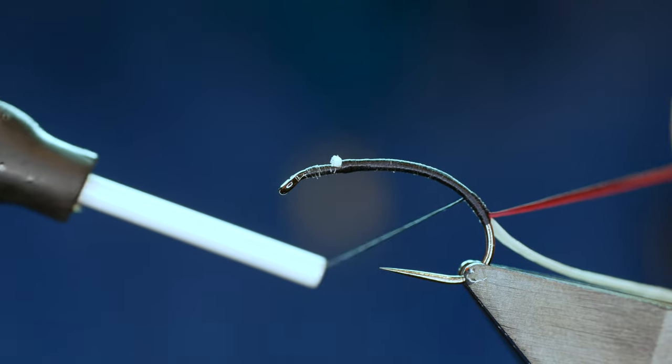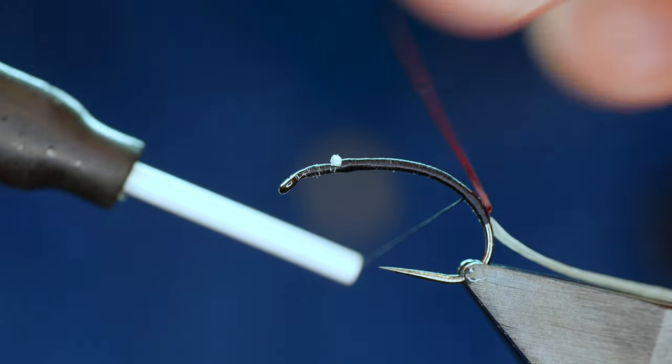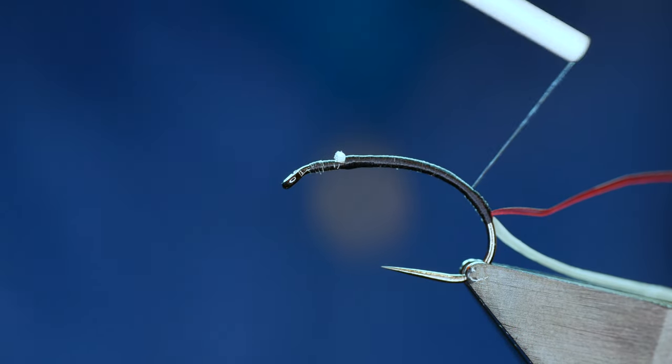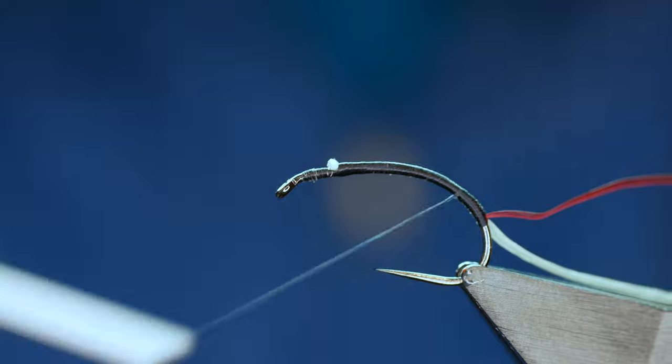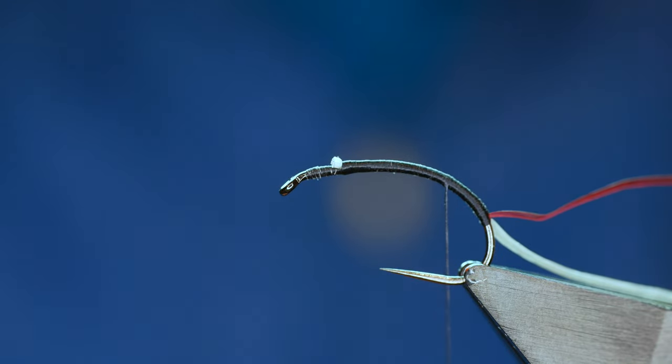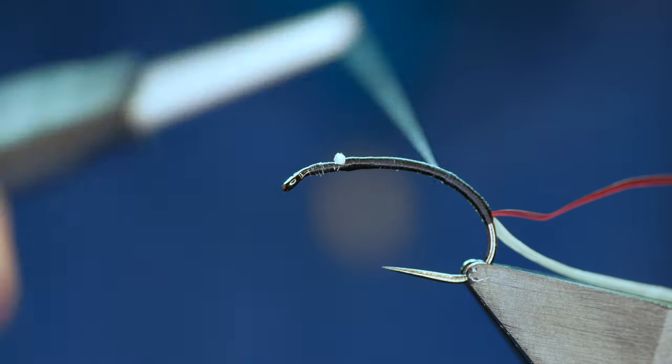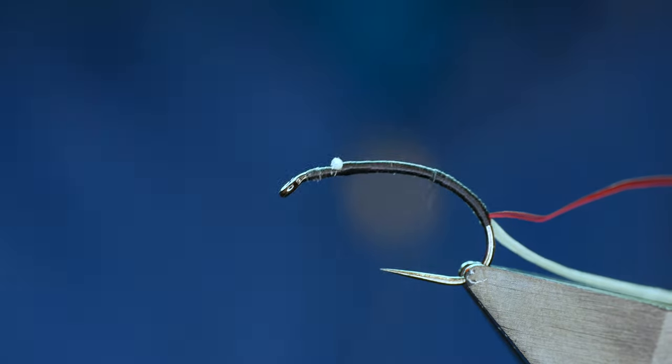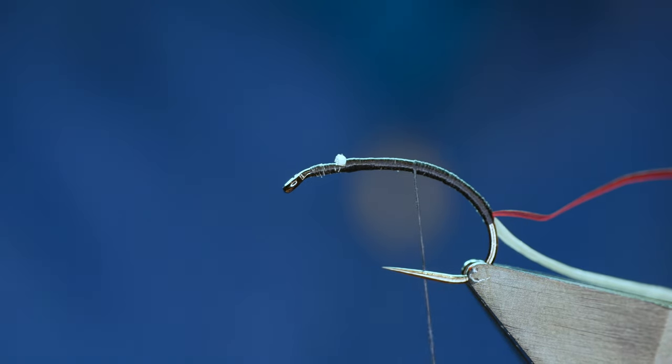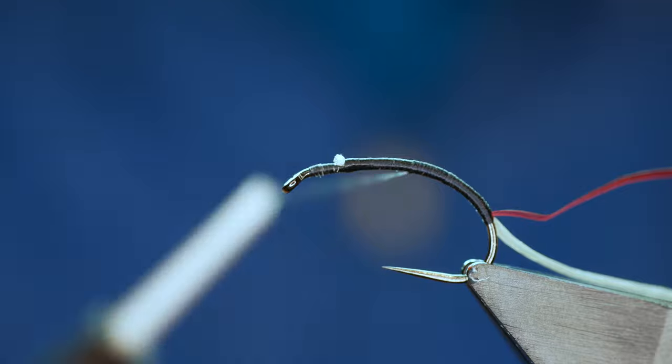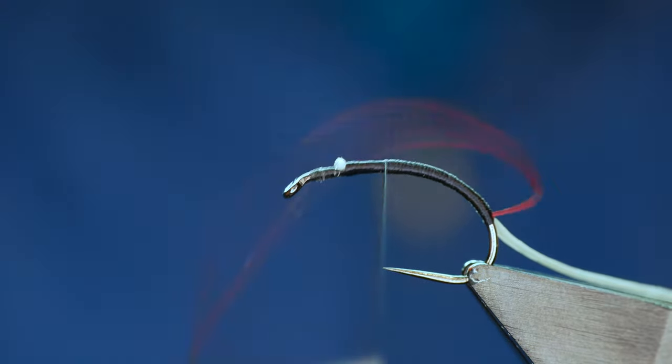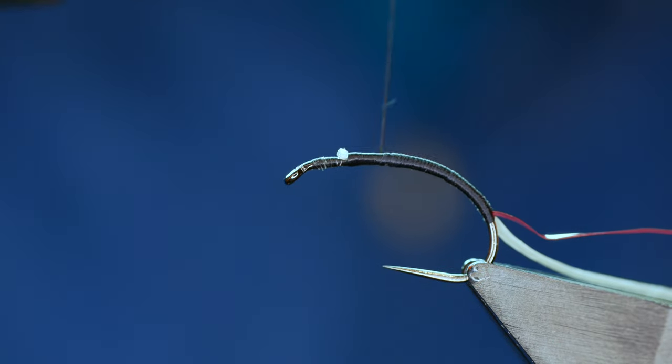Then I can go all the way up and I want to flatten out my thread as well. So that's the reason I like to use UTC with my buzzer patterns. You get quite a lot of bulk where you want it. If you want to slim it down simply give your thread a little turn anti-clockwise and it'll flatten out nice and steady for you there.